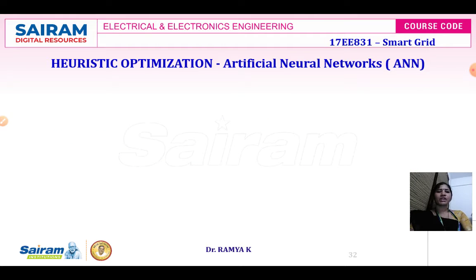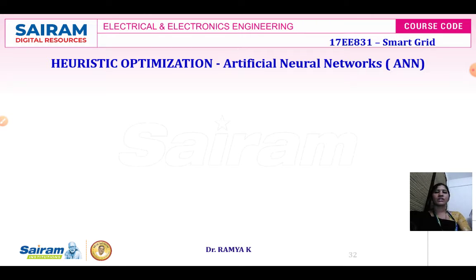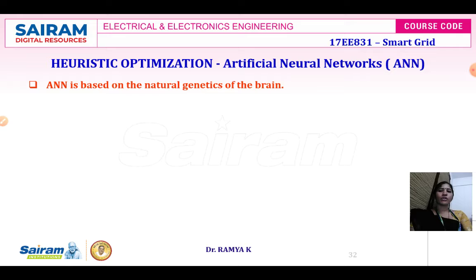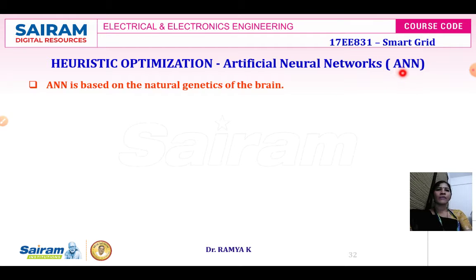Next, under heuristic optimization, we are going to see artificial neural network. ANN uses a genetic algorithm and is based on natural genetics like the brain. Common techniques included in ANN are the back propagation algorithm and forward propagation algorithm. Both these techniques can be incorporated.